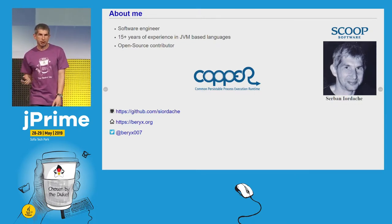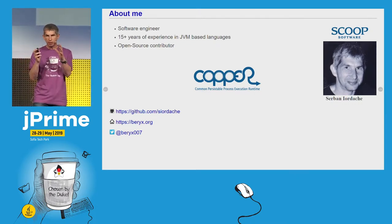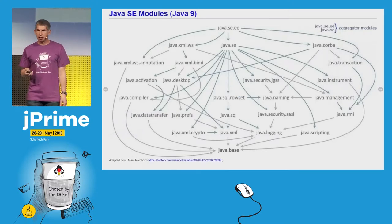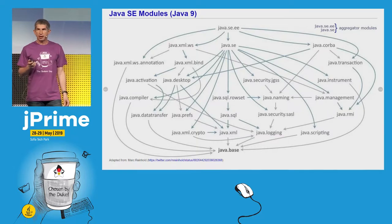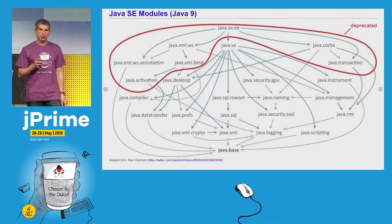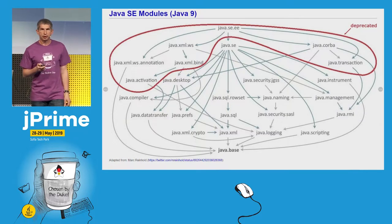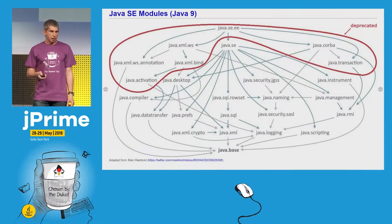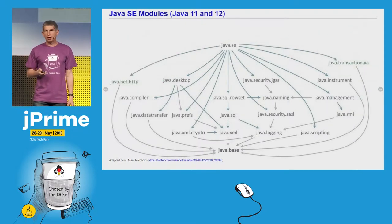But before doing this, let's talk a bit about the Java module system. Since Java 9, the JDK is no longer a monolith — it has been split into several modules. Here you can see the module graph of the Java 9 standard edition platform. At the top of this picture there are several modules related to the enterprise edition, and because they don't really belong to the standard edition platform, they were marked as deprecated in Java 9 and they were removed in Java 11.